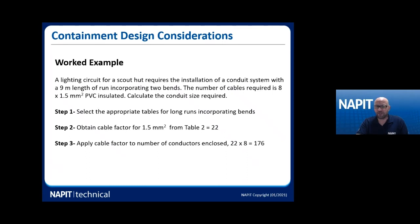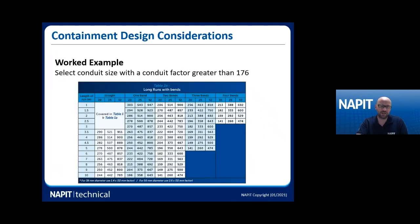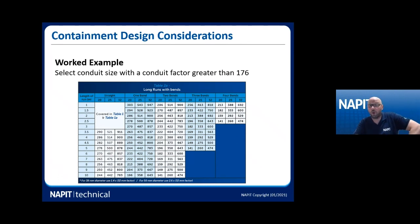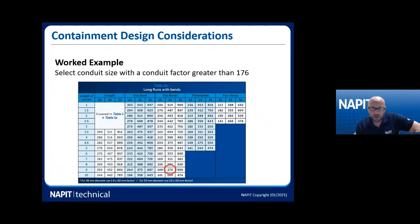Step three: apply the cable factor to the number of conductors — 22 × 8 = 176. Now select the conduit size with a conduit factor greater than 176. Looking along the nine-metre row, going across to the two-bend column, 176 is greater than what a 20mm conduit can take, so we move up to a 25mm conduit. That's how it's done — quite simply.